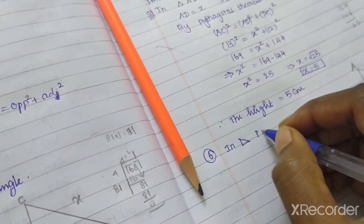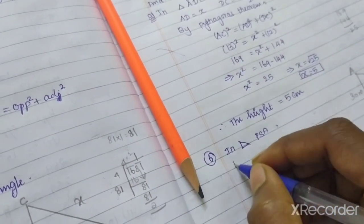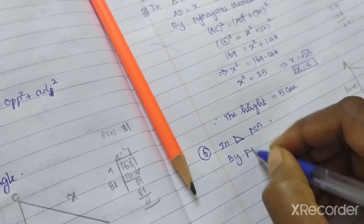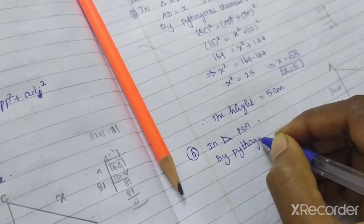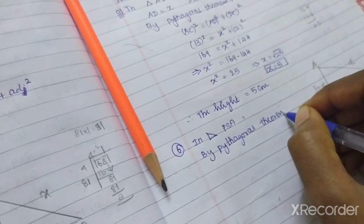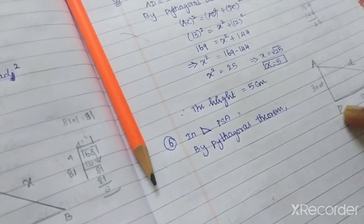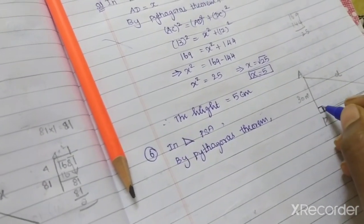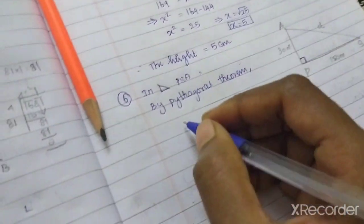In right angle triangle PSE, by Pythagorean theorem, we know this is 90 degrees. So of course this is the hypotenuse.